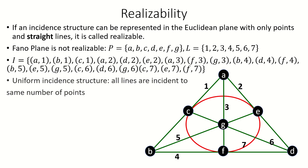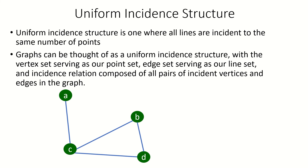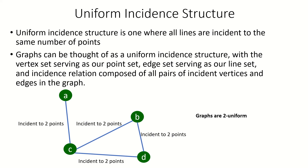The Fano plane also demonstrates the concept of uniform incidence structures, which are incidence structures where all lines are incident with the same number of points. The Fano plane is a three-uniform incidence structure because all lines are incident with three points. Another example of a uniform incidence structure is a graph, where the point set is the vertex set, the line set is the edge set, and the incidence relation is the set of ordered pairs of incident vertices and edges. A graph would be a two-uniform incidence structure because each edge is incident to exactly two vertices.